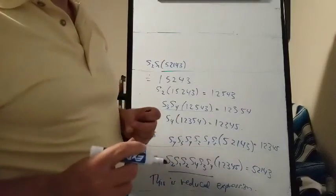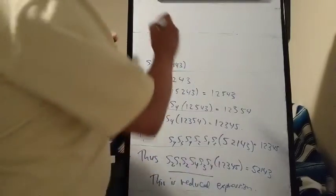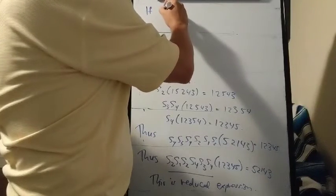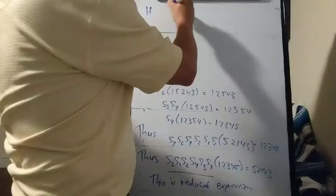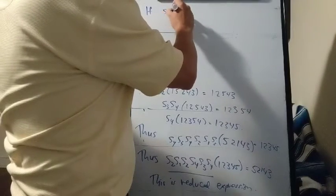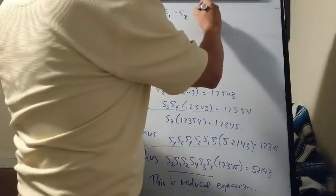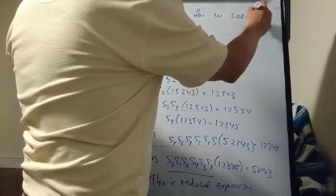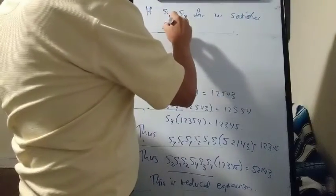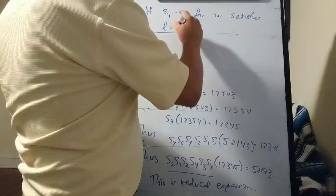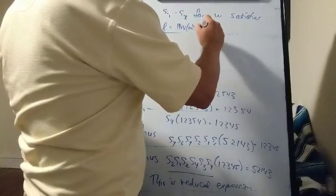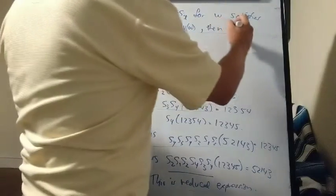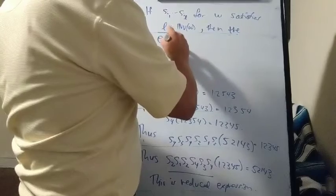So first of all, we know that the length of a permutation equals the number of inversions. So if we have an expression SI1 through SIL for W, and that satisfies L equals the number of inversions in W, so L is the number of generators we use here, then the expression is reduced.